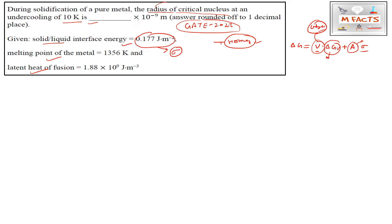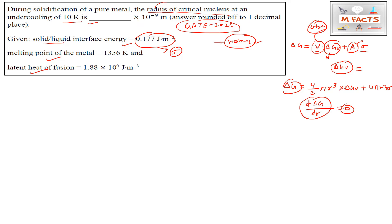To solve for ΔGv and find the critical radius, we write: ΔG = (4/3)πr³·ΔGv + 4πr²·σ. When we differentiate ΔG with respect to r and set it to its maximum value, that maximum corresponds to the critical value. The critical radius r* is obtained by differentiating, giving: r* = -2σ / ΔGv.